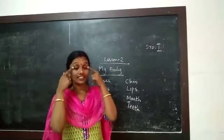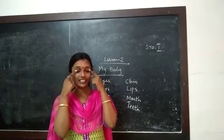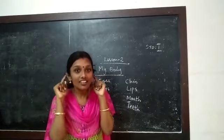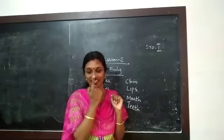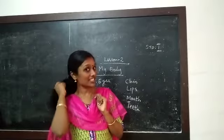What are these? Yes, these are eyes. What are these? These are eyes. What are these? Yes, ears. These are ears. Then what is this? This is nose. What is this? Nose.